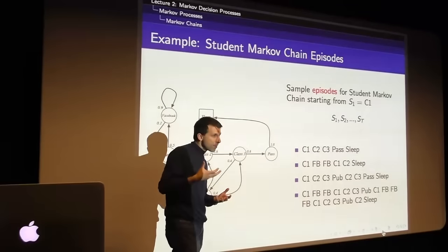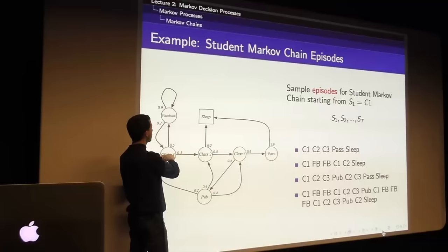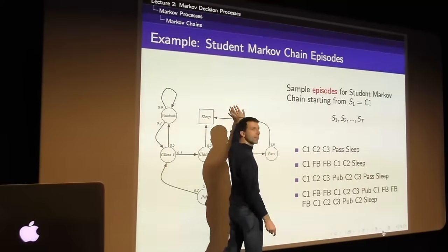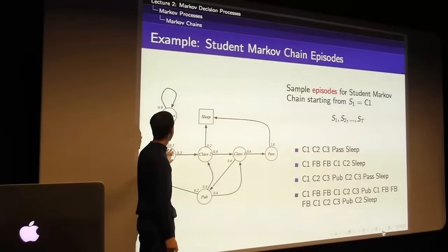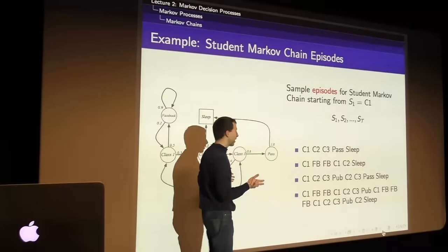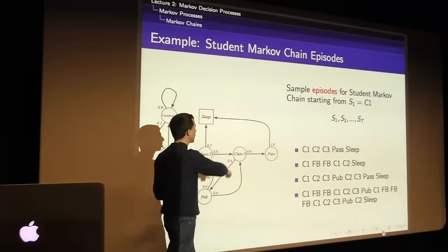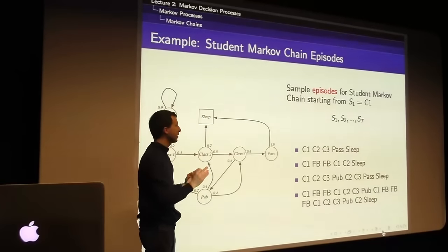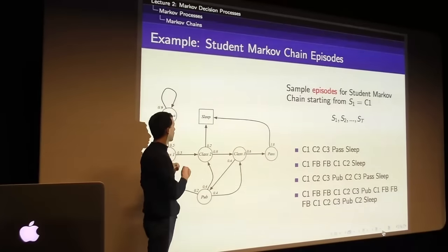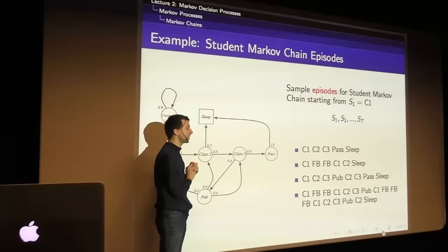A sample from this chain is a sequence of states. Starting from class one, one sample might be: class one, class two, class three, pass, fall asleep. Another might be: class one, Facebook, Facebook again, class two, fall asleep. These are variable-length random sequences drawn from a probability distribution over sequences of states. The fact that it has the Markov property means it can be described by saying: from any state there's some probability of transitioning to any other state.